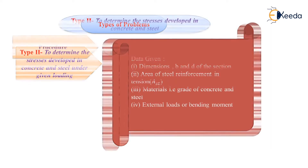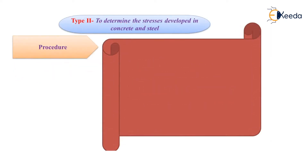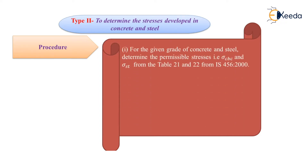Here is the procedure to determine the stresses developed in steel and concrete. The first step is to calculate or find out the values of permissible stresses in concrete and steel, that is Sigma CBC and Sigma ST. We can get these values from table number 21 and table number 22 of IS 456 2000.